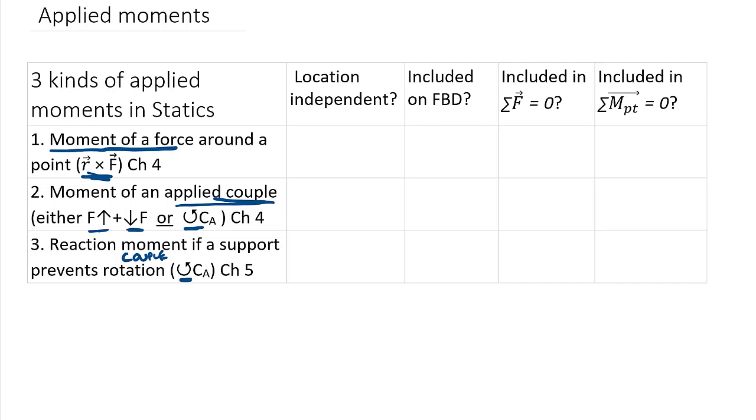So first of all, is an r cross f moment location independent? Well the answer is no and the reason it's not independent is that it's going to vary with r. If I pick a different point on my body to sum moments around then I'm going to have a different distance between that point to the line of action of the force, therefore my moment will vary depending on where I sum moments around. But for these other two it turns out they are both location independent and that's because they're couples.